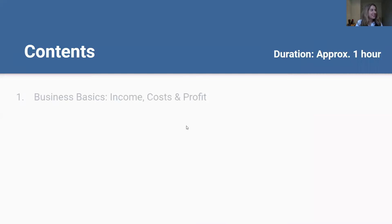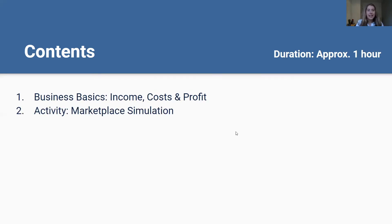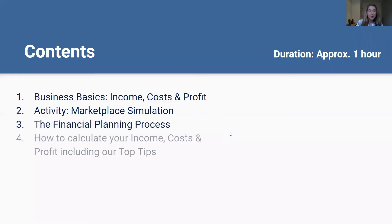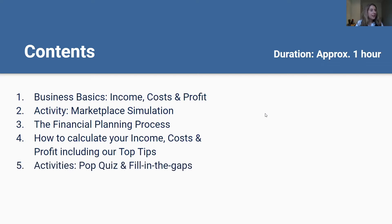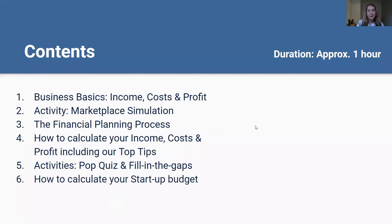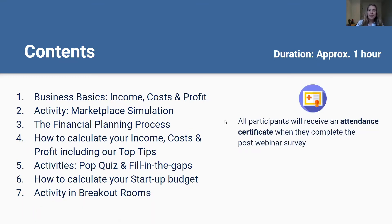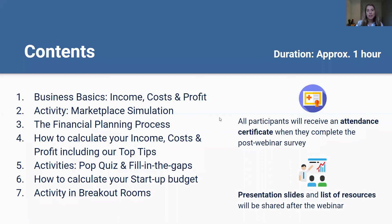We've got lots of exciting things to get through. We'll begin by looking at some business basics — defining income, costs and profit. Then I'll introduce you to a nice activity, the marketplace simulation. Then we'll look at the process of financial planning and how to calculate the income, costs and profit for your own school business, as well as some of our top tips. Then we'll look at a pop quiz and a fill-in-the-gaps exercise before ending with how to calculate your startup budget and an activity in breakout rooms. At the end I'll share a link to a survey so you can receive your certificate of attendance, and I'll also share these presentation slides by email.